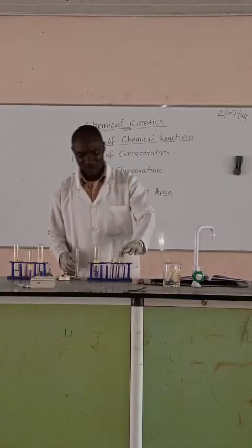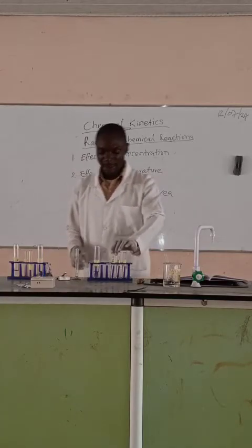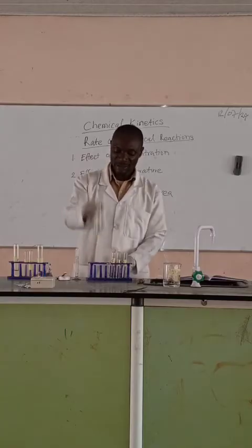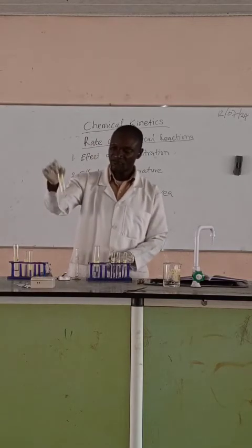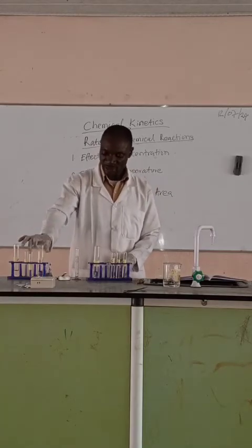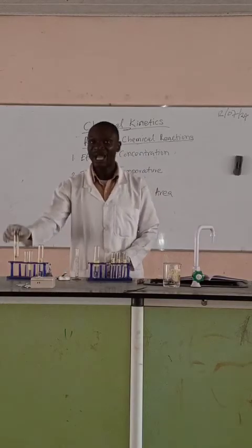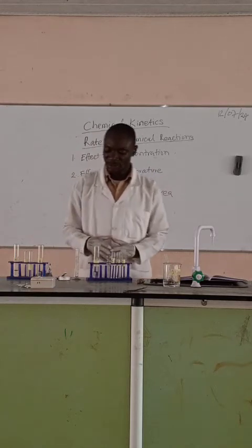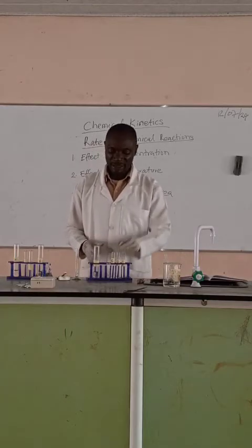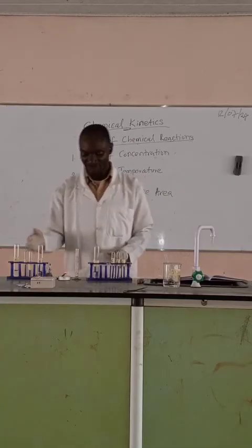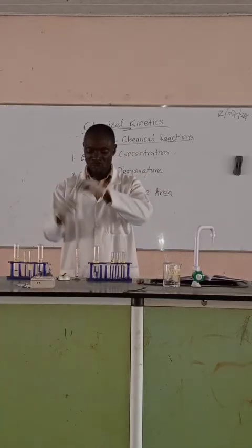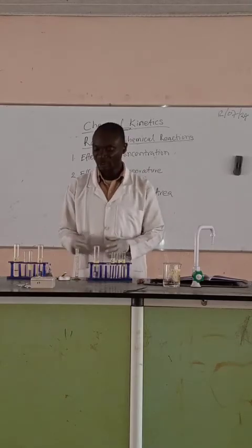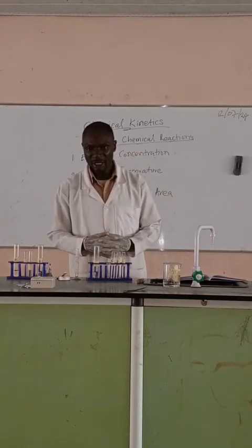A has 5 ml acetic acid content — the highest concentration — followed by B with 3 ml, and lastly C with 1 ml. Similarly, D has 2 spatulas of sodium bicarbonate — the most concentrated — followed by E with 1 spatula, and F with half a spatula. We will pour A into D, B into E, and C into F, pairing the most concentrated solutions together to observe the rate of chemical reaction.